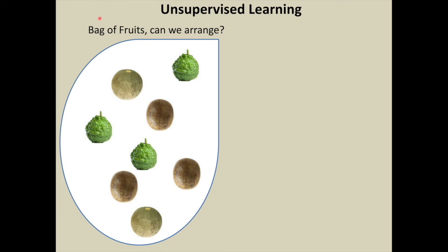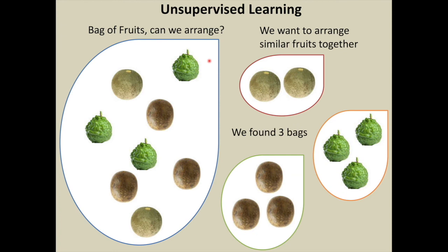Since we have discussed supervised learning, it would be good to illustrate unsupervised learning very briefly. If a bag of fruits is given where we are not familiar with fruits, can we arrange them? We can arrange similar fruits together and dissimilar in different bags. Here we have found 3 bags. This is called clustering.